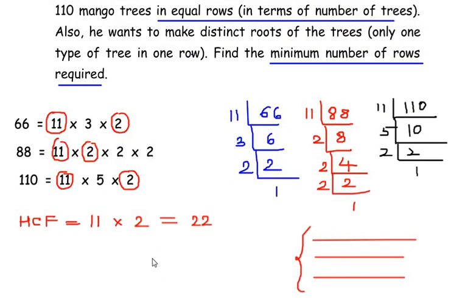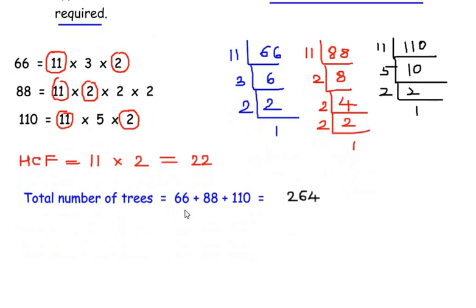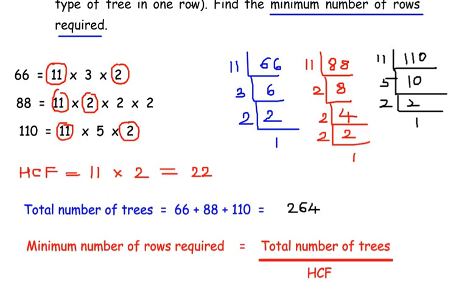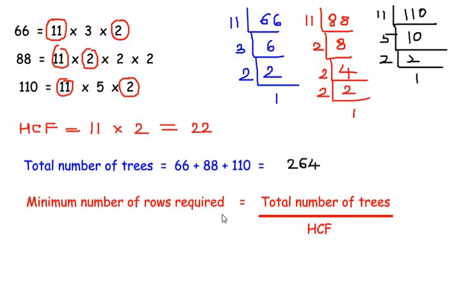So let us find out the total number of trees now. So total number of trees are 66 plus 88 plus 110 and that will give us 264 trees. So these are many trees and maximum in each row there have to be 22 trees. So the minimum number of rows required can be written as total number of trees divided by HCF to find the minimum number of rows.